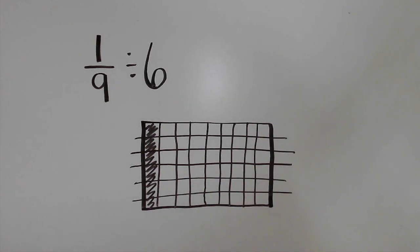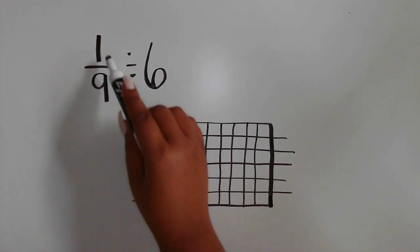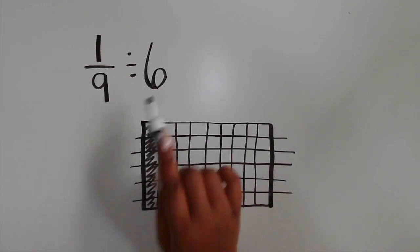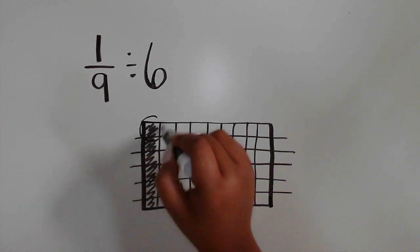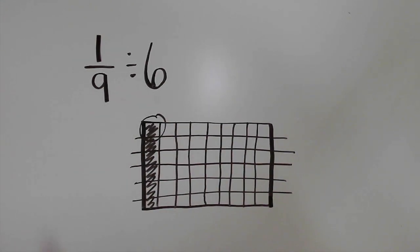Again, when dividing a unit fraction by a whole number, you are determining the size of each part in comparison to the whole, so you can circle one of the parts.